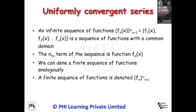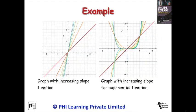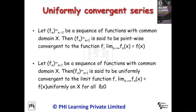An infinite sequence of functions with a common domain is considered. The Nth term of the sequence is a function, and we can define a finite sequence of functions analogously. This is a sequence of diagonal straight lines passing through the origin whose slope is increasing. If we have a sequence of the simplest Nth degree polynomials whose exponent is increasing, the graph obtained will be as shown in the figure. With sequences of real numbers or sequences of elements in metric spaces, we can also define sequences of functions converging to a limit function F.